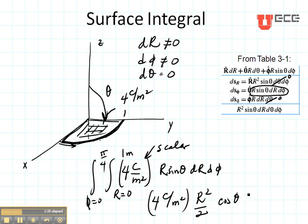Theta goes from zero to pi by four and R goes from zero to one. So there's the integration that I have in order to find the charge that's on that piece of surface.